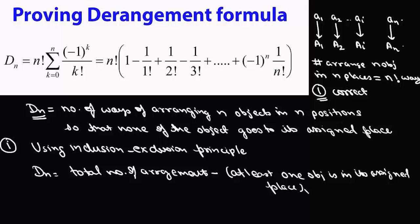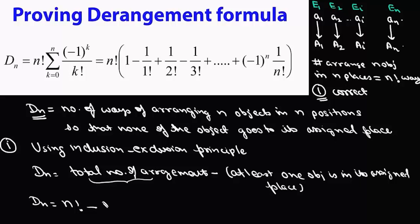From the total, we remove all cases in which at least one object is in its assigned place. For simplicity, we define event E1 as when a1 goes to its assigned place A1, event E2 as when a2 goes to A2, Ei as when ai goes to Ai, and En as when an goes to An. So D(n) equals total arrangements minus the cases where at least one of E1, E2, ..., En occurs.